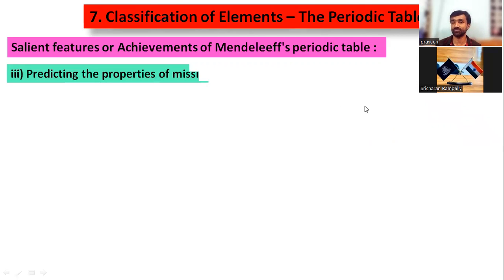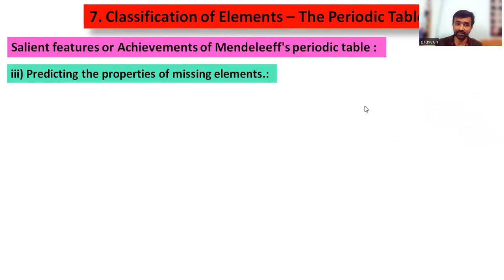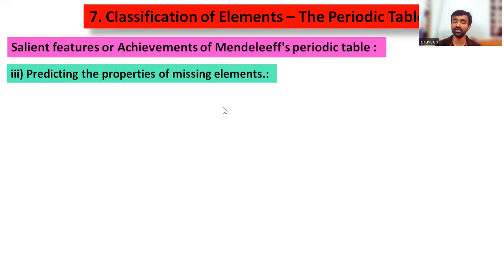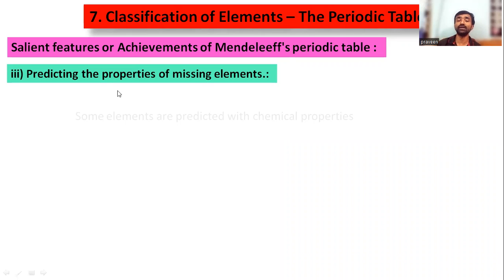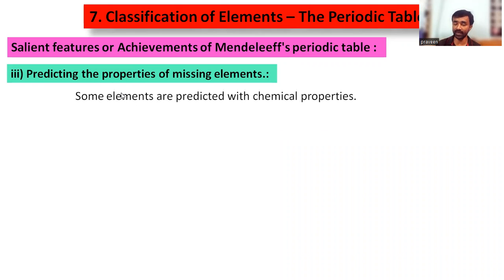Next, predicting the properties of missing elements. Some elements were not available at the time of Mendeleev's classification. While classifying available elements into groups and periods, he assumed that certain elements may be discovered in the future with particular characteristic properties.